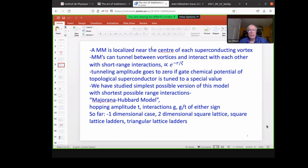So a Majorana fermion mode is localized near the center of each vortex, and Majorana fermion modes can tunnel between vortices and interact with each other with short-range interactions proportional to exponential minus R over ξ, where ξ is the coherence length of the superconductor. And the tunneling amplitude goes to zero if the gate chemical potential of the topological insulator is tuned to a special value. So we studied simple as possible version of this model with shortest possible range interactions. We call this the Majorana-Hubbard model. So we have a hopping amplitude T, we have interactions G, and we consider G over T either sign because it could be attractive or repulsive. Being in a superconductor, we might expect it's attractive, but we consider either sign. So far we considered the one-dimensional case and two-dimensional square lattice and triangular lattice.